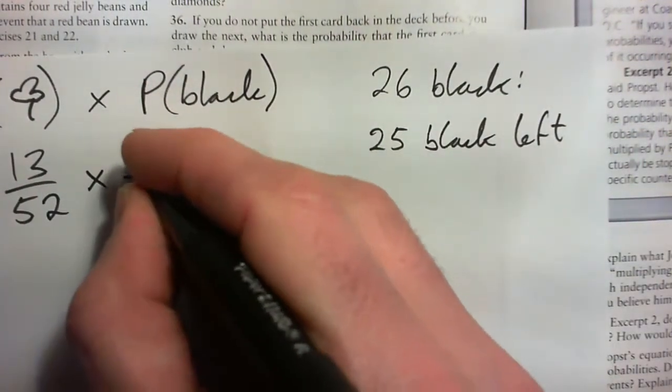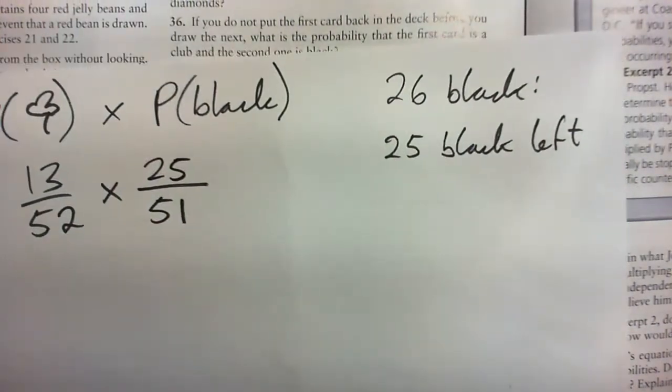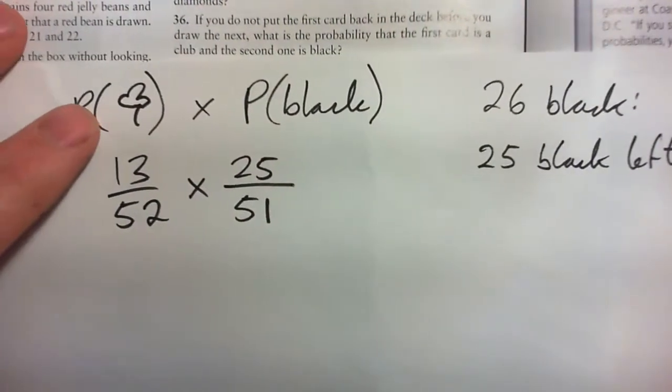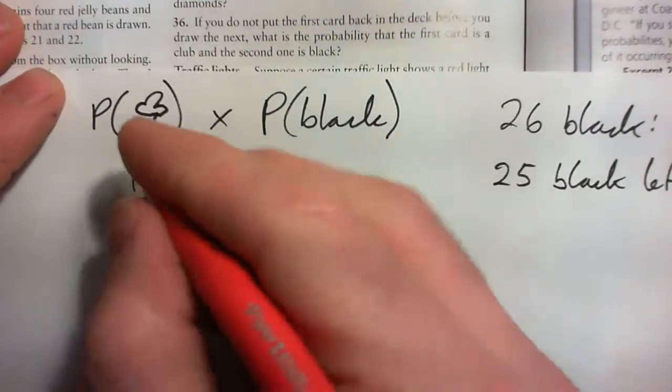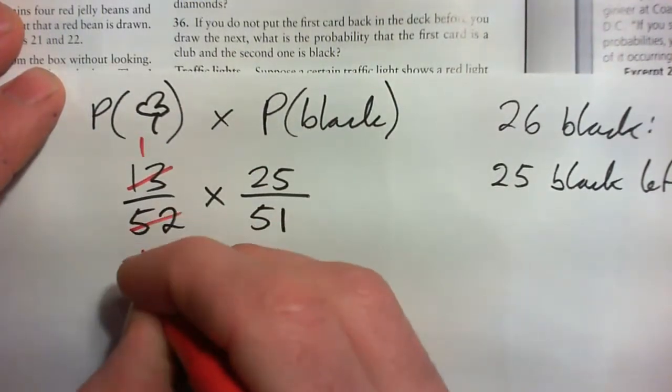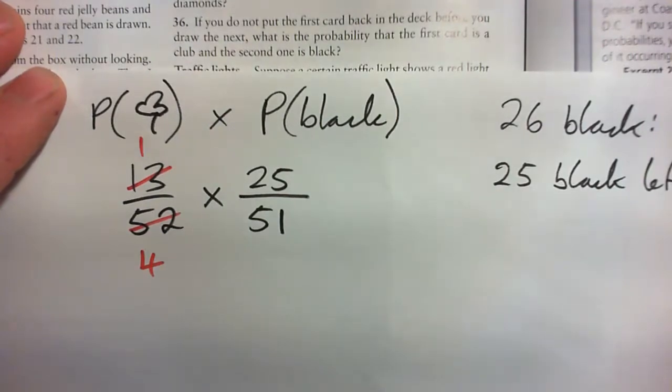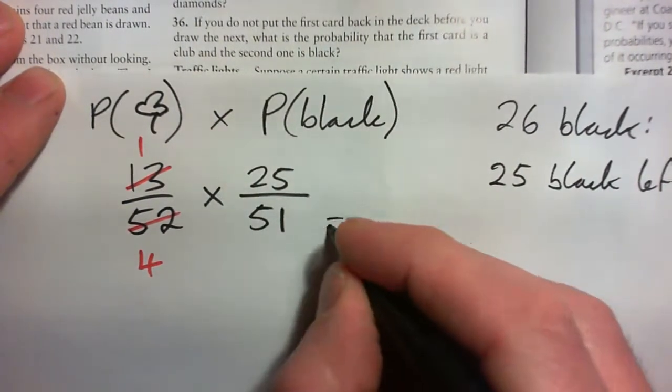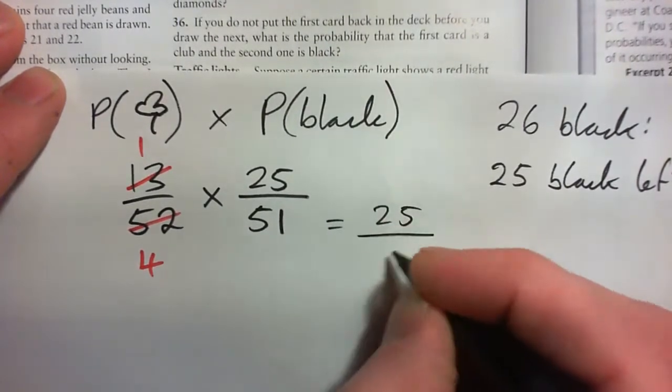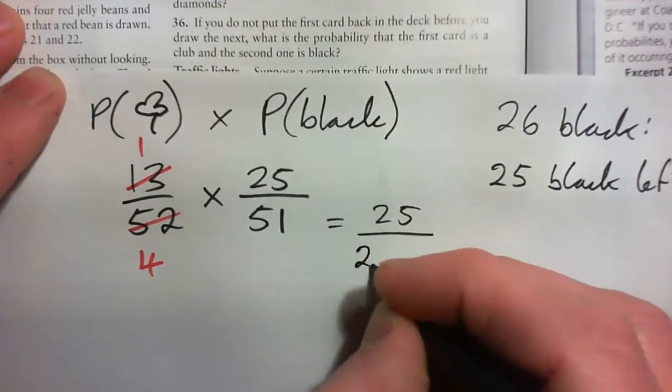So that goes here, the chances of the next card being black is actually 25 out of 51. And we can cross cancel: 13 into itself goes once and that goes four times, nothing else cross cancels. This gives us 25 over 204.